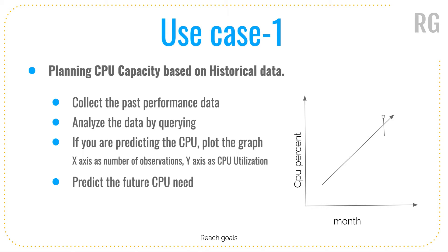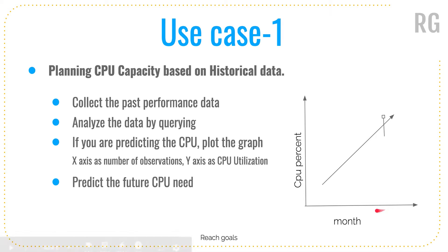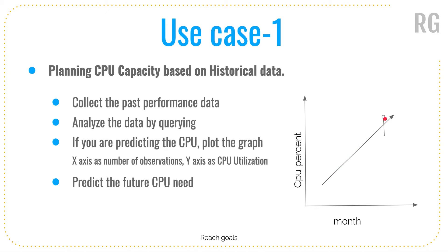From that historical data, we figure out for a particular month what was the CPU capacity. For example, last January the CPU percentage was 15%, in February it was 20%, and it gradually keeps going based on traffic patterns. When traffic increases, the CPU load keeps increasing. We can plot a graph with months on the x-axis and CPU percentage on the y-axis.